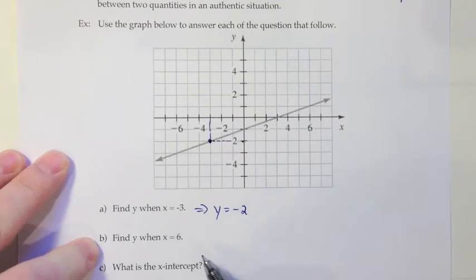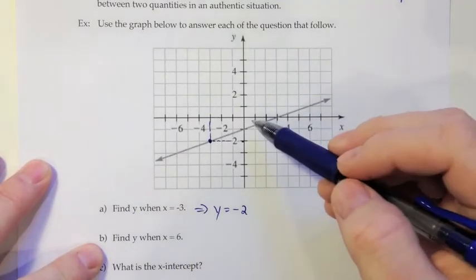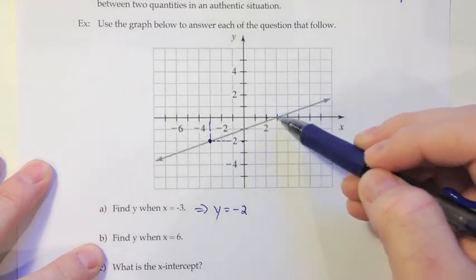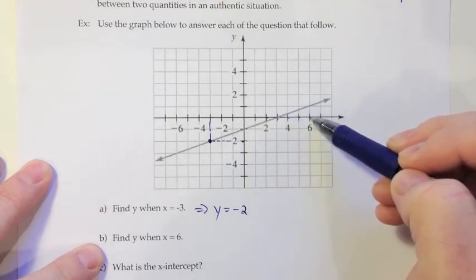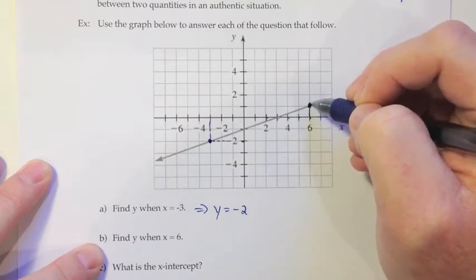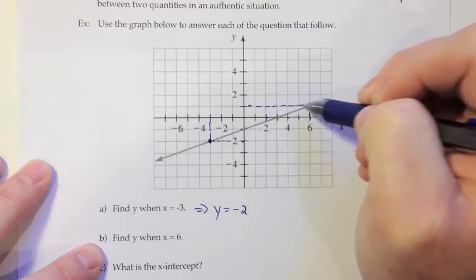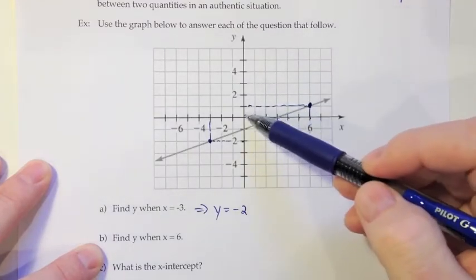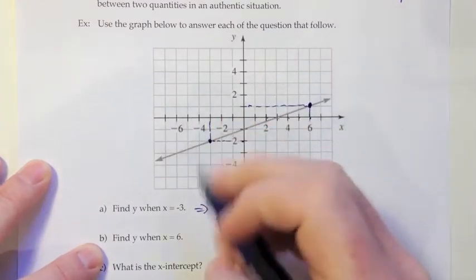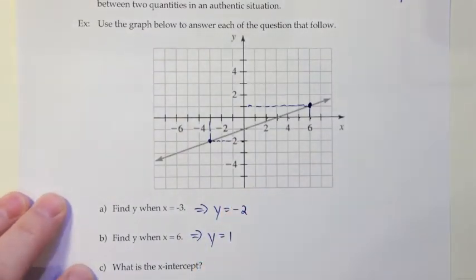And then just trying that one more time with a y value. Find the y value when x is 6. So we go on the x-axis over to 1, 2, 3, 4, 5, 6. And then we would go up until we hit the graph. So there's the point we're talking about. And we want to know how high is that. If you look across to the vertical axis you see 1 unit up there. So that implies that the y is equal to 1 when the x is 6.